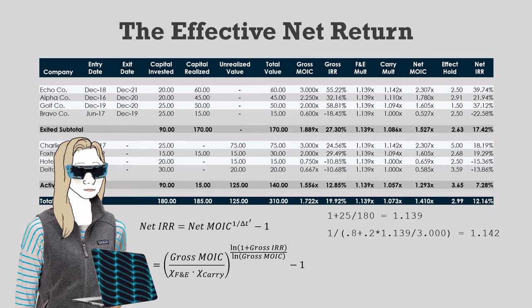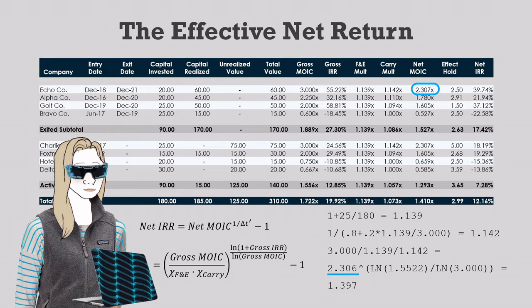The net multiple is 3 divided by these two multipliers, or 2.306x, which matches Echo Company's net multiple on the table. Now raise this to the power of log 1.5522 over log 3, and we get 1.397. Subtract 1, and we have 0.397, or 39.7%, which matches Echo Company's net IRR on the table.